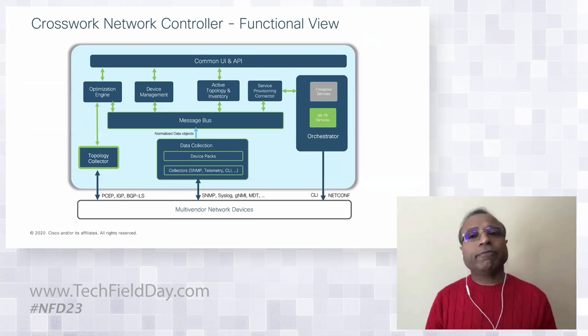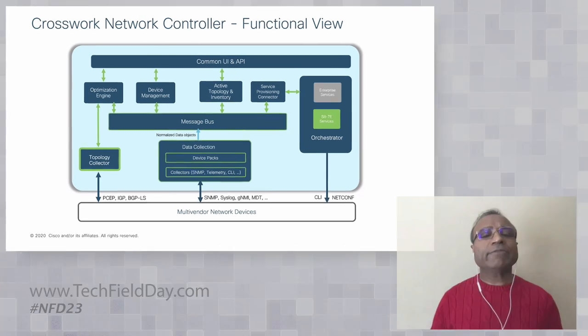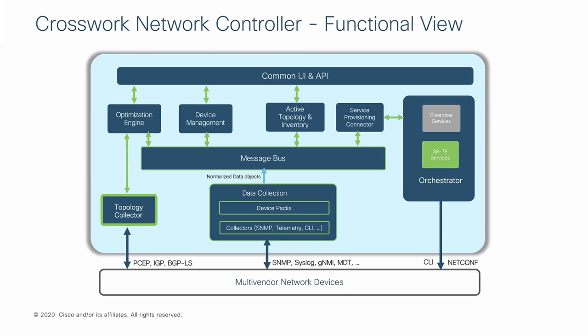Let me go a little deeper before handing it over to Krishnan and talk about how the different components within the controller interact, and how the controller works with the underlying network infrastructure or with external systems. On the right side is the orchestrator function implemented by NSO, which helps to expedite the provisioning of services. As the user requests services through the UI or API, it leverages the service provisioning connector to talk to NSO, through which service provisioning happens. The Crosswalk applications on the left use the same connector to talk to NSO to learn about the service inventory.